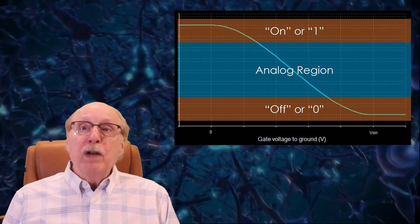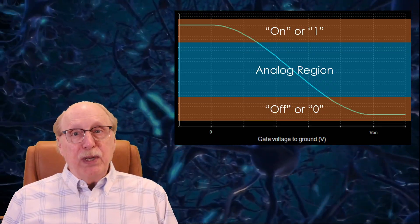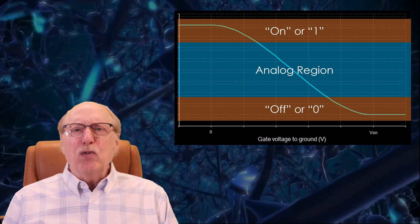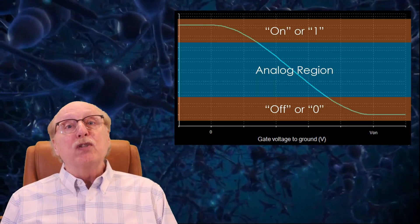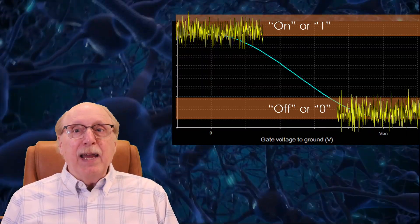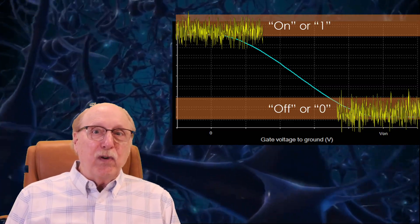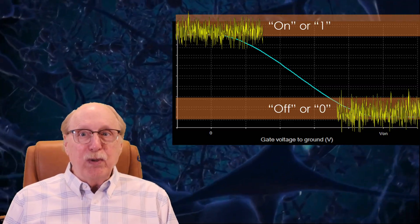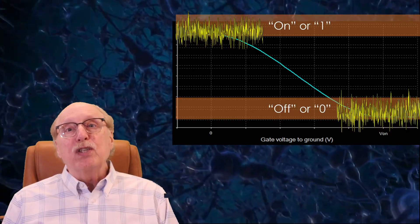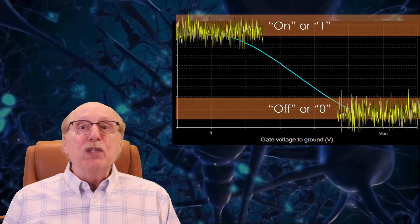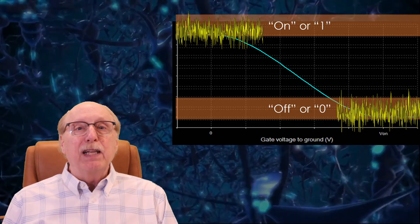In between on and off, transistors can be considered to be in the analog range of continuous signals. But by ignoring these in-between levels, we consider a circuit to be digital, and these have the advantage of higher speed, lower power, and greater reliability or noise immunity because we can consider a signal to be either 0 or 1 even if the specific voltage is a bit off from the ideal value.